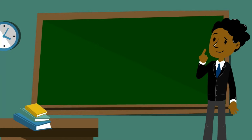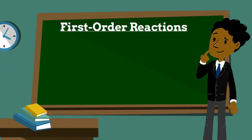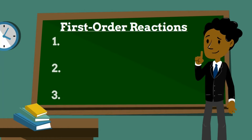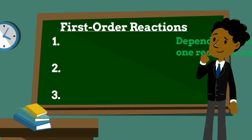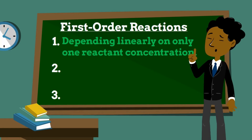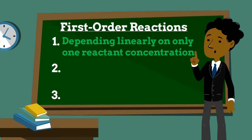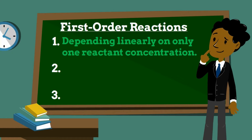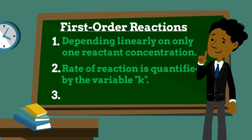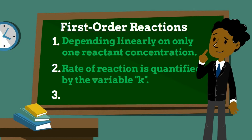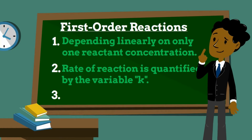This problem centers around first order reactions, which are very common in the field of engineering. A first order reaction is a reaction that proceeds at a rate that depends linearly on only one reacting concentration. The reaction rate coefficient is labeled by the variable K, which will lead us to the actual reaction rate.